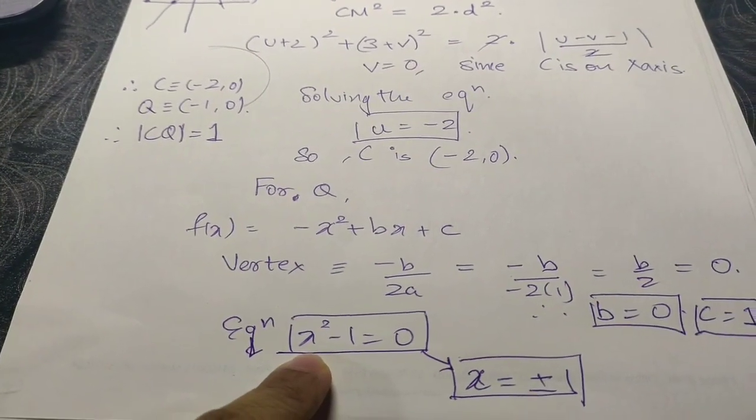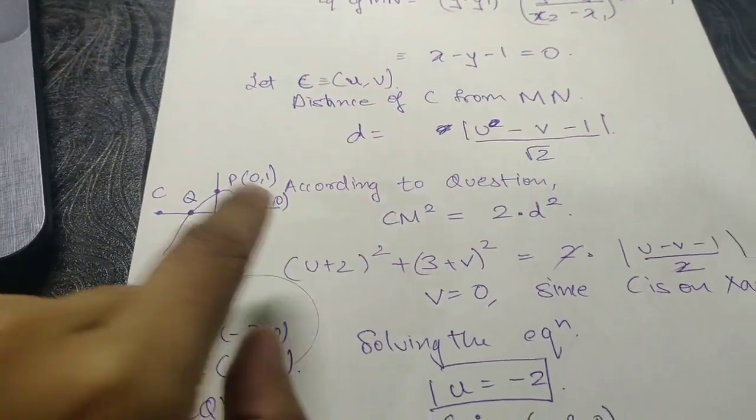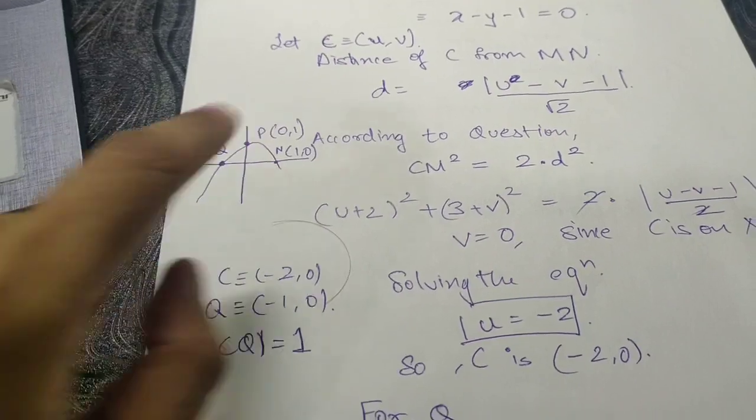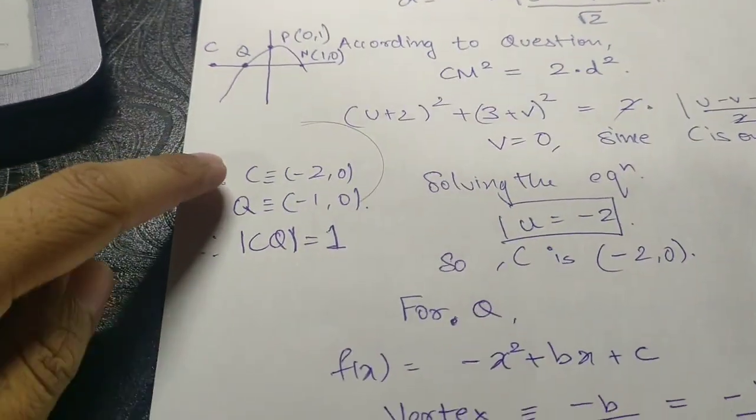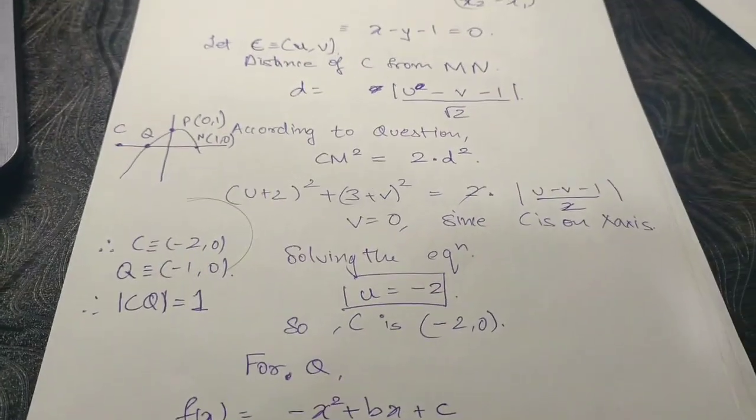Solving this equation to get x equals to plus or minus one. Since we already have plus one, that is (1, 0), so Q is (-1, 0). With that we can find the distance between C and Q easily, which is one unit. So that is the value of k and that is the answer.